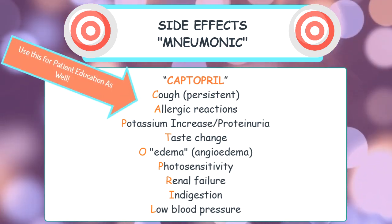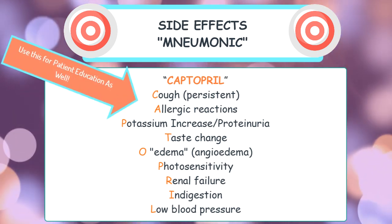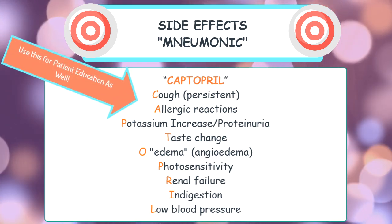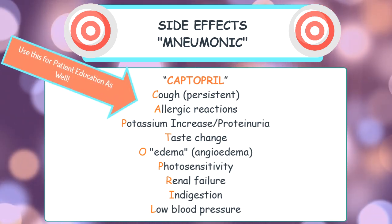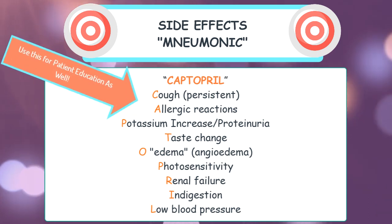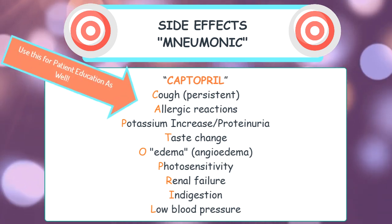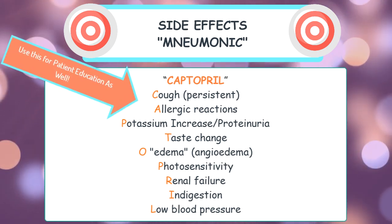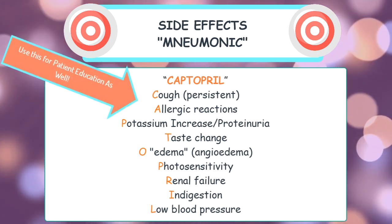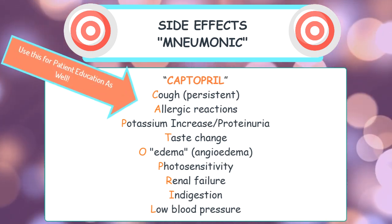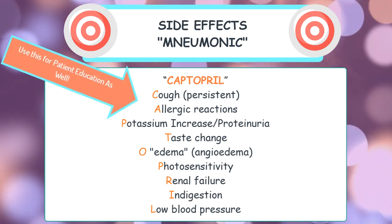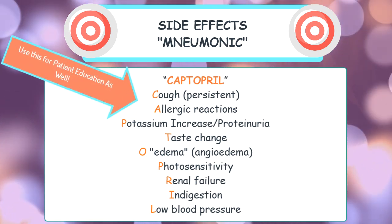P is for potassium increase and proteinuria. ACE inhibitors may increase blood levels of potassium, so it is very important that you include this in your patient education, because there are patients that use potassium supplements or salt substitutes, which often contain potassium. Proteinuria means that ACE inhibitors may cause the patient to have protein in their urine.